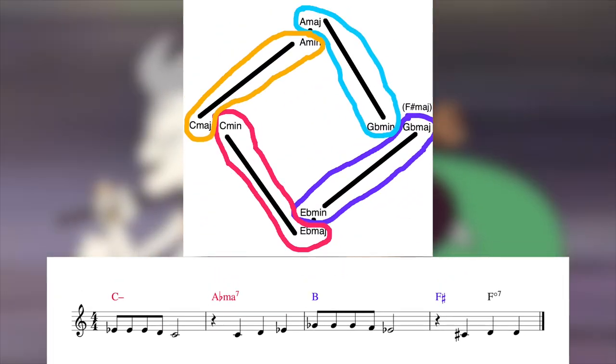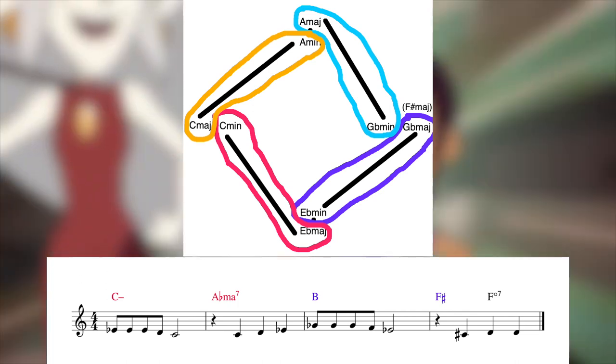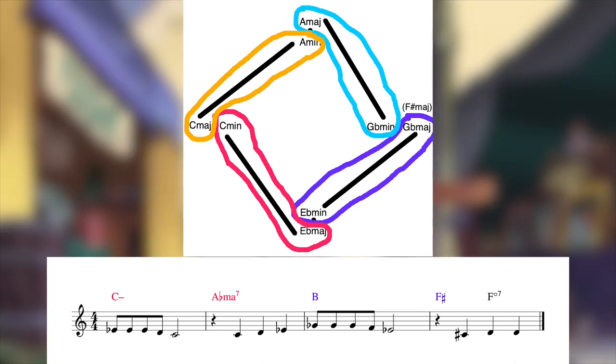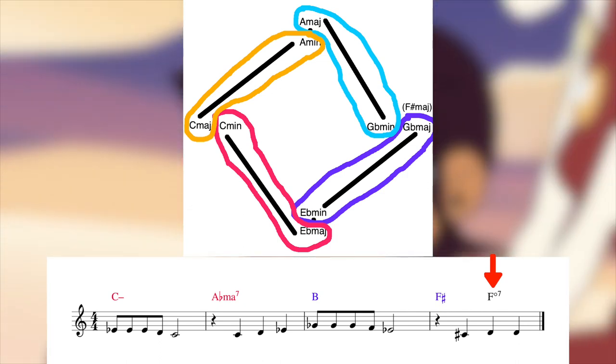As you can tell by the colors, we've borrowed these chords from the F sharp major side of the axis. B major and F sharp major are 4 and 1 in F sharp respectively. You've probably noticed that this F diminished 7 chord hasn't been given a color. Diminished 7 chords aren't diatonic to the major scale, or its respective natural minor scale, so it isn't found anywhere on the axis. So where does this even come from?